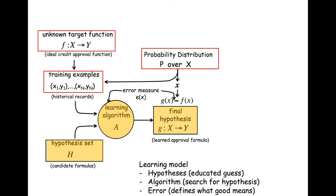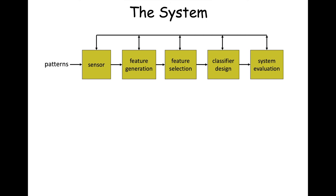The learning algorithm searches and results in a final best hypothesis we're calling G. We also talked about a pipeline for the end-to-end pattern recognition system: input patterns feed into a sensor, followed by feature generation, feature selection, classifier design, and ultimately system evaluation.